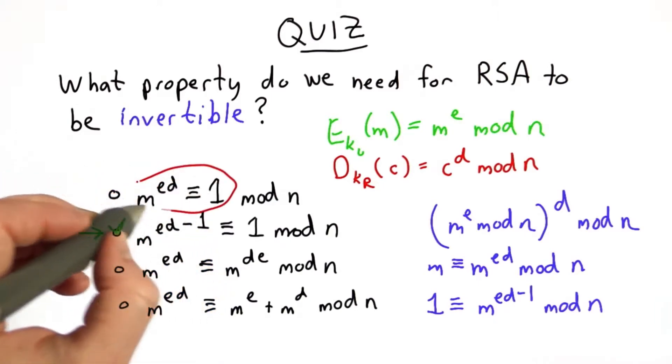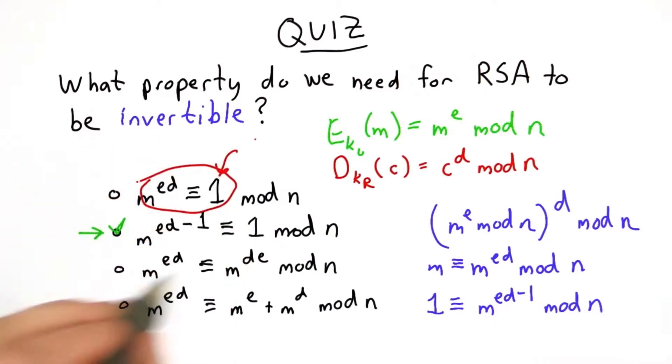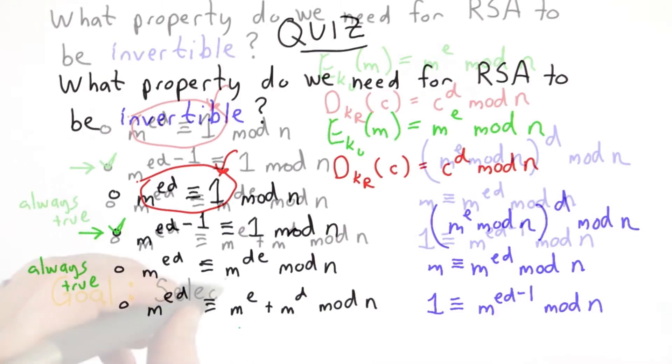If we had this property, all messages would decrypt as 1. That wouldn't be very useful. This property is always true but not useful, and this property is unlikely to be true.